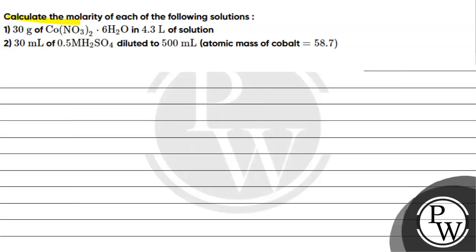Let's read this question. Calculate the molarity of each of the following solutions: 1) 30 grams of Co(NO3)2·6H2O in 4.3 liters of solution; 2) 30 milliliters of 0.5 molar H2SO4 diluted to 500 ml. Atomic mass of cobalt is given as 58.7. The key concept for this question is molarity.